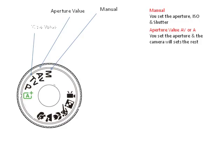Moving on to TV — some of you will have TV, which is time value, or some of you have S, which is shutter. At the end of the day, you will have to set the shutter and the camera will then set the ISO and the aperture.